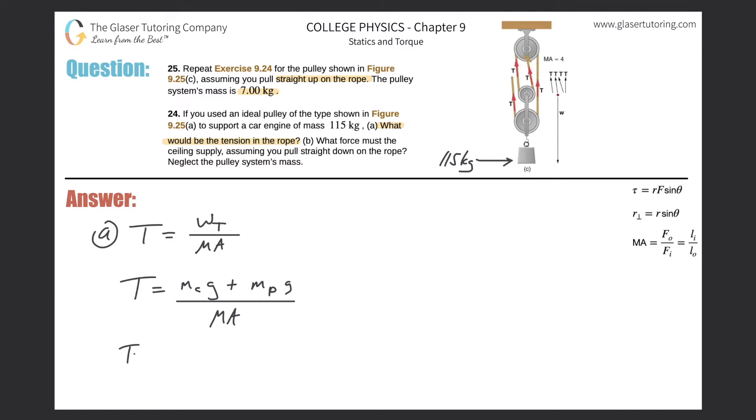So all we have to do now is plug in the values. The mass of the car engine was 115 kilograms times 9.8, plus the mass of the pulley system was 7 kilograms times 9.8, and then all divided by the mechanical advantage, which is 4. So let's just plug it into the calculator, 115 times 9.8 plus 7 times 9.8, all divided by 4. Considering sig figs and rounding, we get 299 newtons. That takes care of letter A.